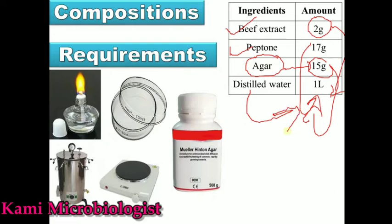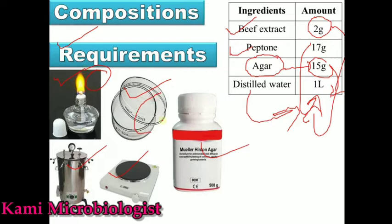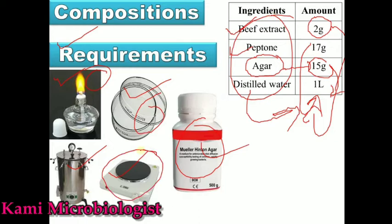Mix all these ingredients in 1 liter, heat-mix it, autoclave it, and then use it for antibiotic profiling purposes. The requirements for media preparation include a spirit clamp, Petri plates, a Mueller Hinton bottle containing the powder-like Mueller Hinton agar material, a hot plate, and an autoclave. Through the hot plate you mix the ingredients, and through the autoclave you sterilize the media.